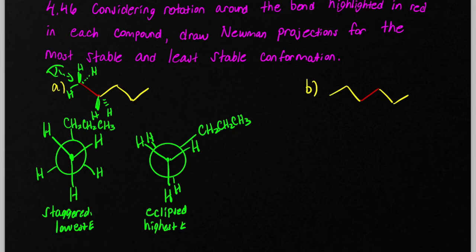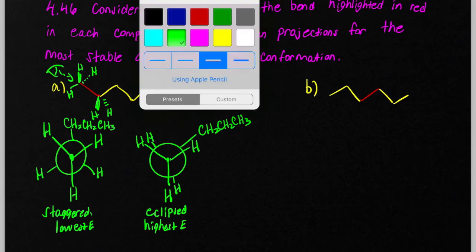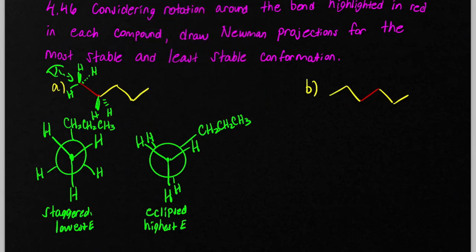This would be the highest energy. In the vocabulary words of the original problem, the lowest energy would be called the most stable. And the highest energy is what we call the least stable.